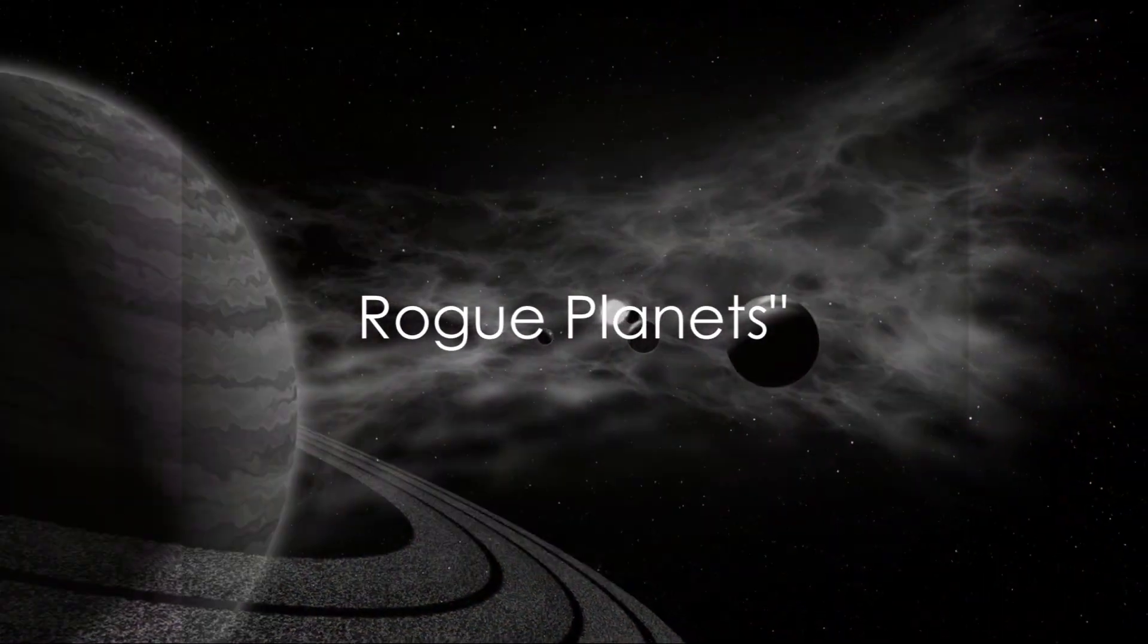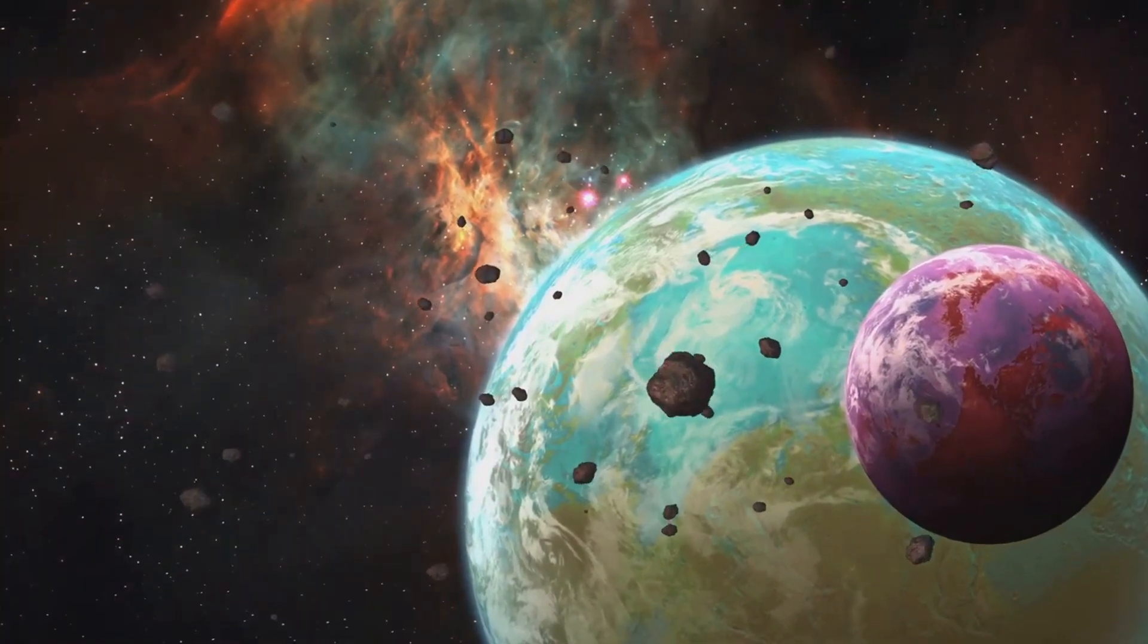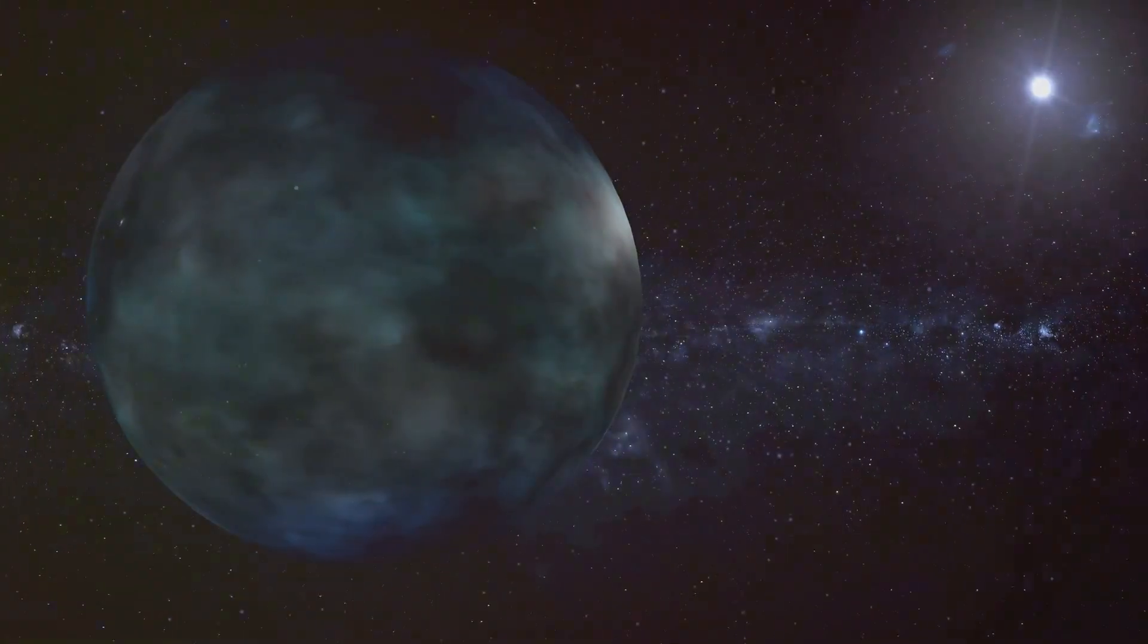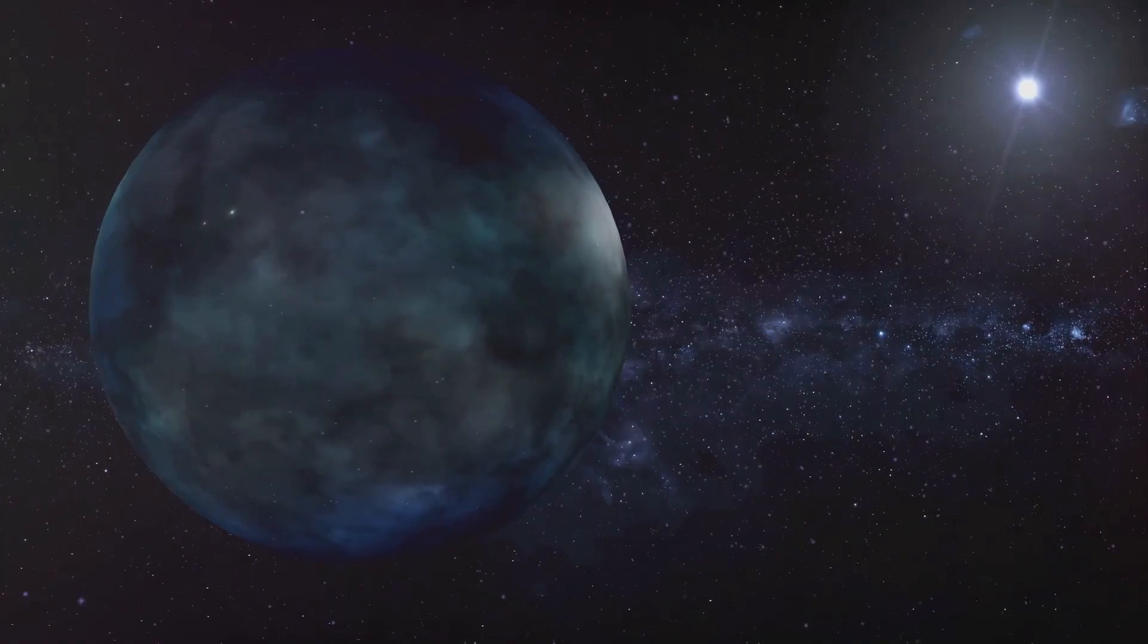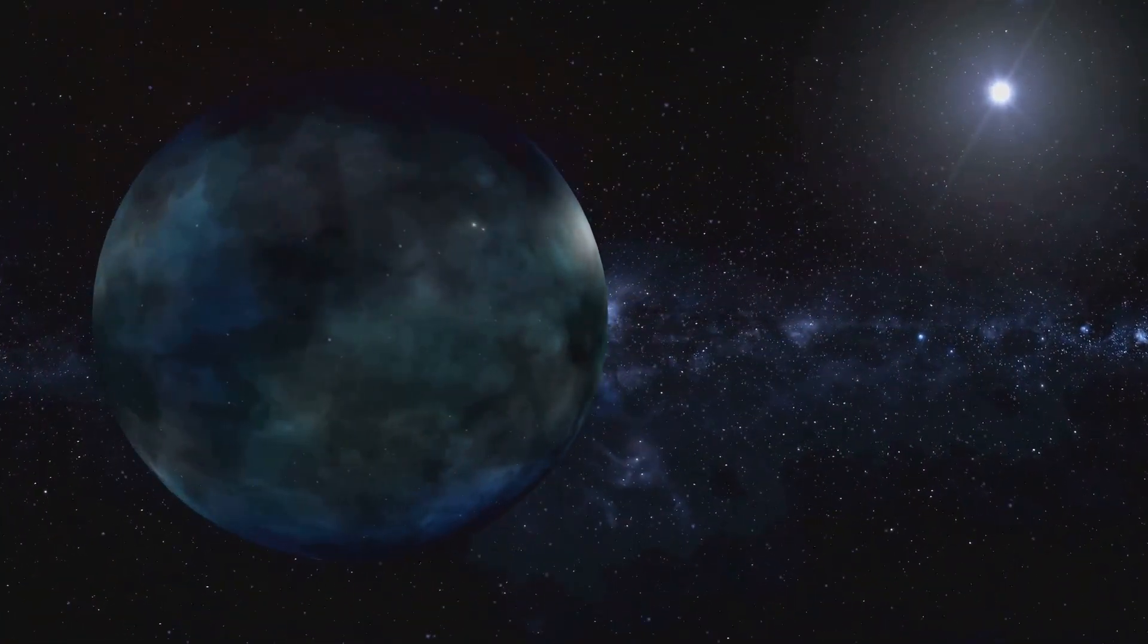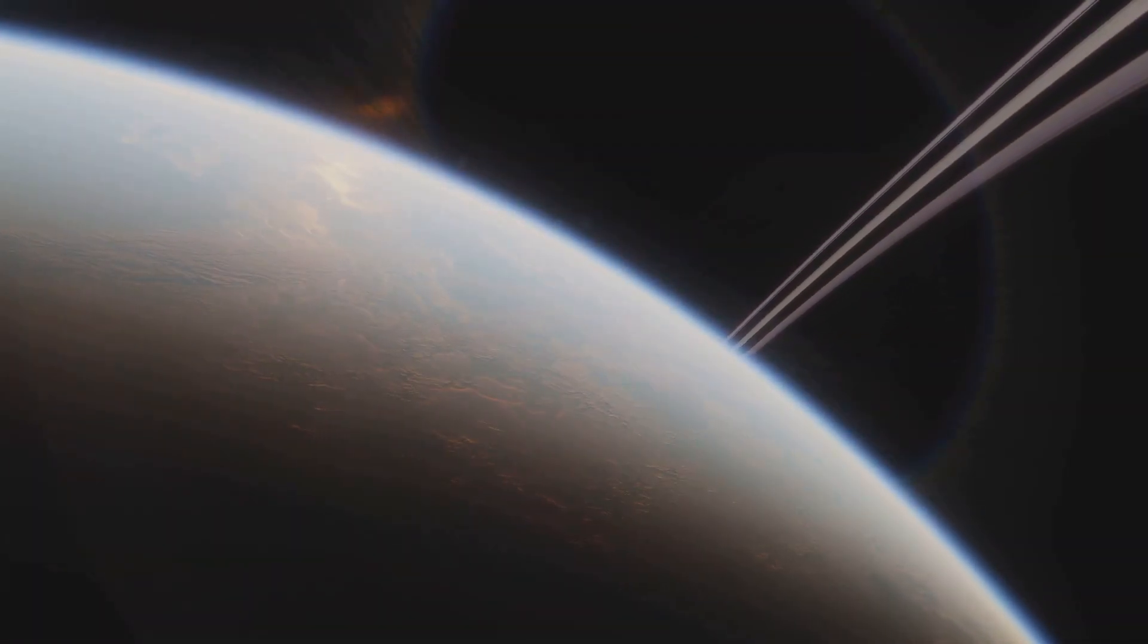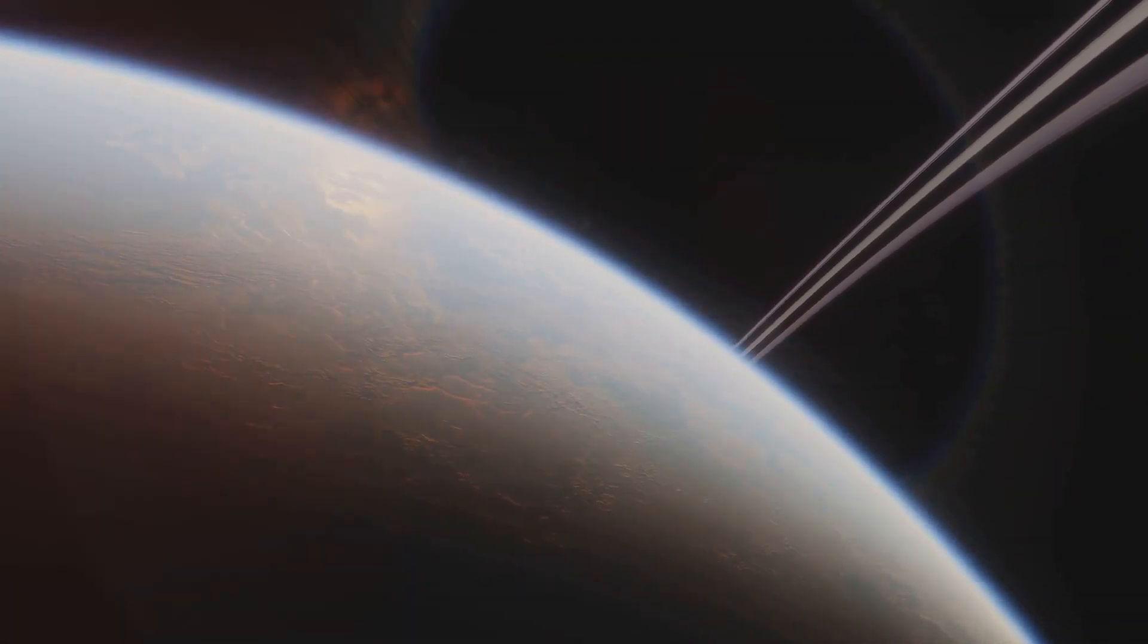And finally, the title for the most extreme planet goes to the rogue planets, wandering through space without a star. These celestial bodies, unbound by any gravitational pull from a star, drift alone in the vast cosmic ocean. Not tethered to any solar system, they follow a lonely, unpredictable path through the universe.